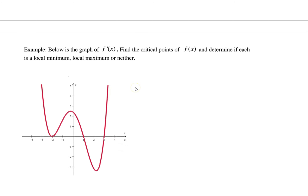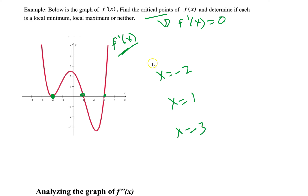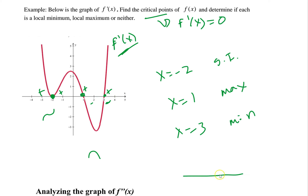This is a derivative graph. Find critical points where it crosses zero: x = −2, x = 1, and x = 3. At x = −2, it goes from positive to positive — stationary inflection. At x = 1, it goes from plus to minus — local max. At x = 3, it goes from negative to positive — local min. You can also draw a sign chart: plus, plus, minus, plus — same conclusion. Whatever method works best for you.